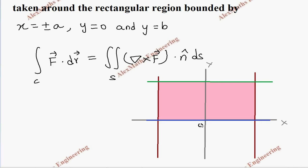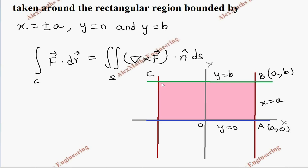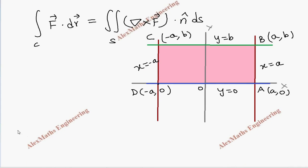The origin is O. We label the corners: point A is (a, 0), point B is where x = a meets y = b, so B is (a, b). Point C is at x = −a, y = b, so C is (−a, b), and the remaining corner is (−a, 0). The line CD has equation x = −a.